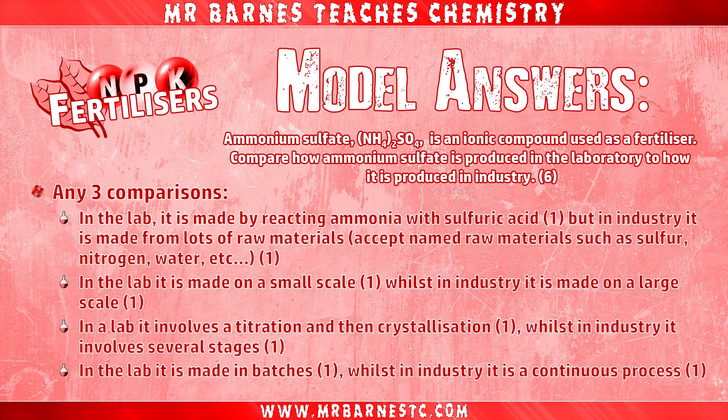It's worth pointing out that because this is a comparison question, you wouldn't get full marks just for listing lab points. For example, saying it's made by reacting ammonia with sulfuric acid, it's made on a small scale, and it involves titration and crystallization would get you three marks — but because you haven't made comparisons, you can't get the fourth, fifth, and sixth marks even if you add that it's made in batches. You have to include those comparisons.